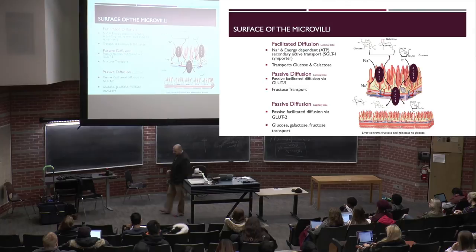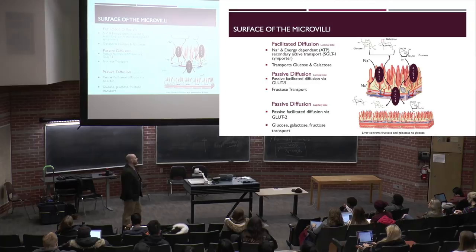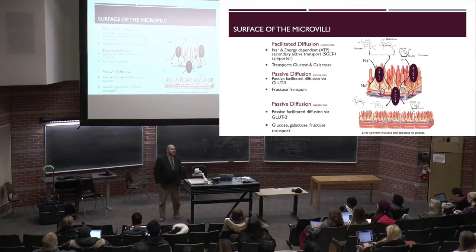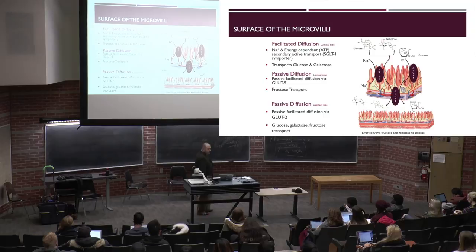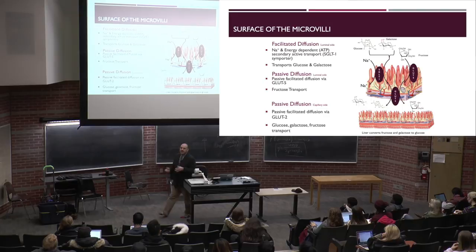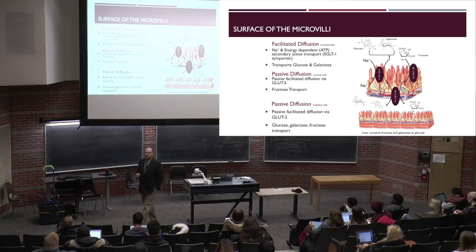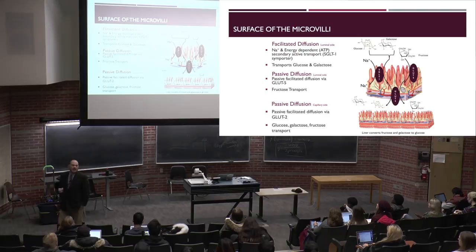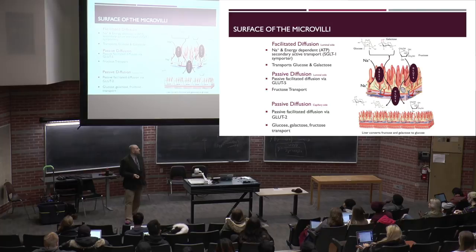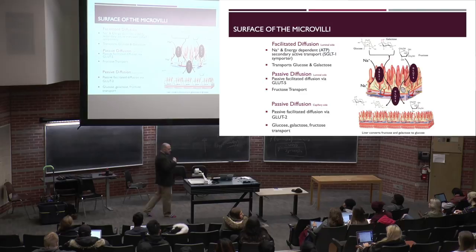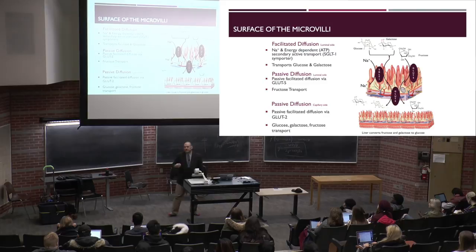Going back to before the midterm, let's talk about how sugars move across the epithelial cell lining. When we talk about different monosaccharides, different transporters are required on the epithelial cell. There are two main transporters — one primarily for glucose and galactose, and one that moves fructose. What's important to understand is that they require transport to move across the epithelial cell lining, and this is true irrespective of what cell that is.